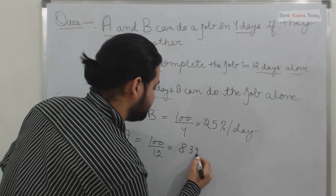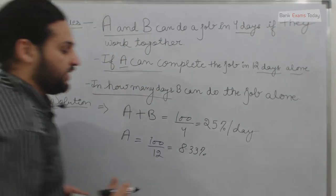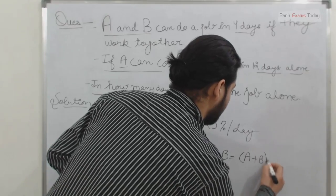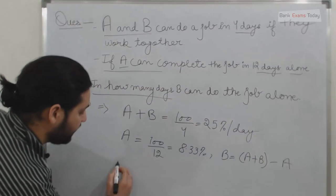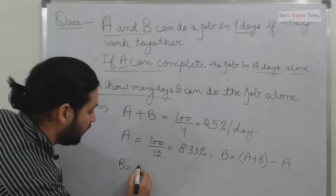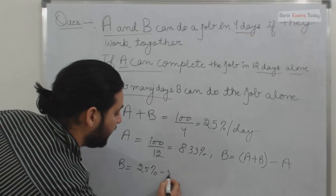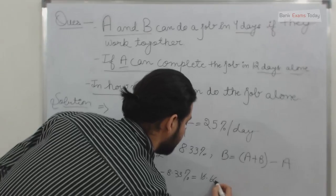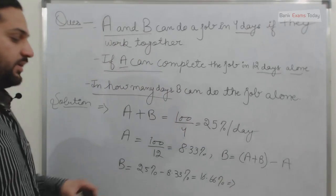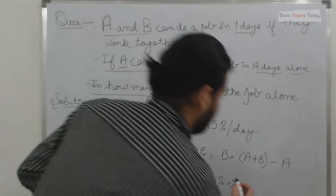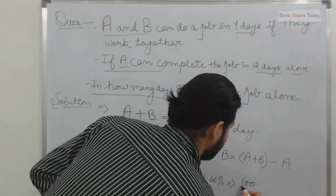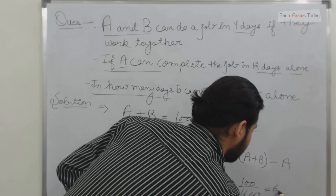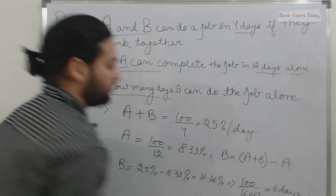The efficiency of A alone is 100 divided by 12, which comes out to be 8.33 percent. The efficiency of B is the combined efficiency of A and B minus the efficiency of A, which is 25 percent minus 8.33 percent, giving 16.66 percent. Converting to days: 100 divided by 16.66 comes out to be 6 days. So 6 days is the answer.